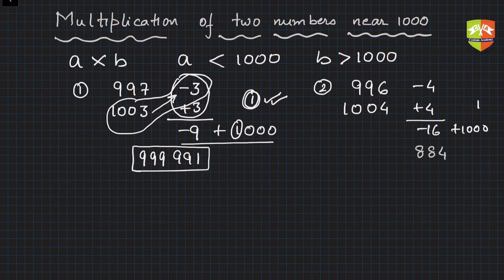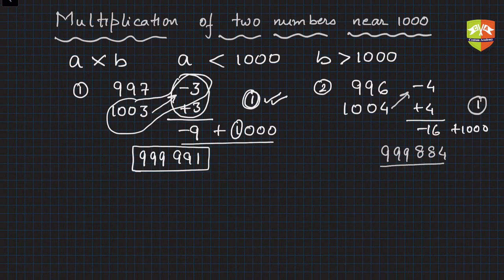Then do the diagonal operation: 1004 minus 4 is 1000, and subtract the 1, so you get 999. The product is 999,884. The only difference here is you have to subtract 1 while performing the diagonal operation. Either diagonal gives the same result — you just reduce one from that.